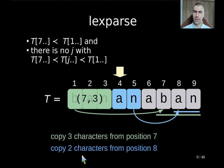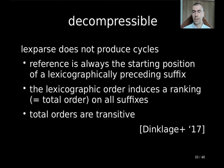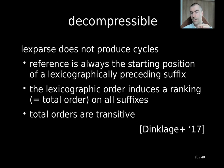The question is, why don't we create cycles? Well, we don't create cycles because a reference is always the starting position of a lexicographically preceding suffix. And the lexicographic order introduces a ranking, meaning a total order on all suffixes. A total order is a property that is transitive. So whenever we have a cycle, this means that at one point we would have to refer to a lexicographically succeeding suffix, and this can never happen. So it's not possible to create cycles. Okay, so we have a valid bidirectional parse.